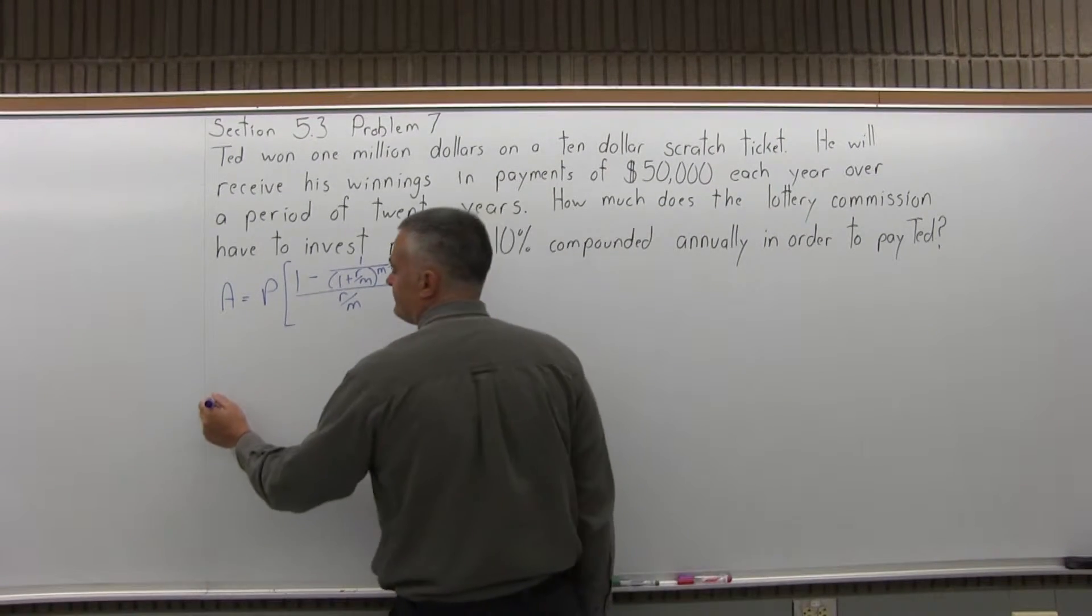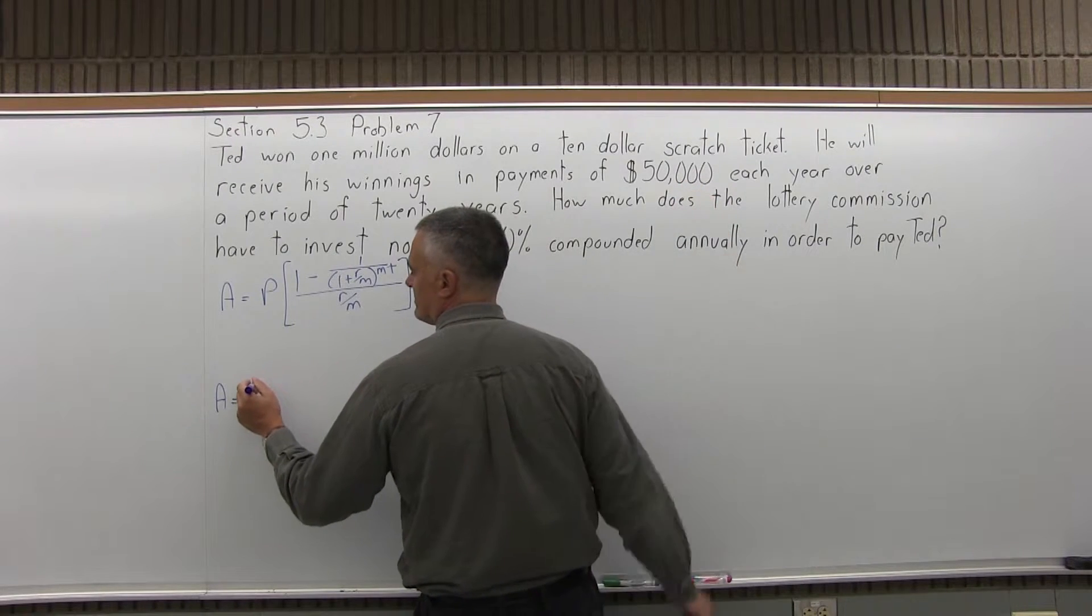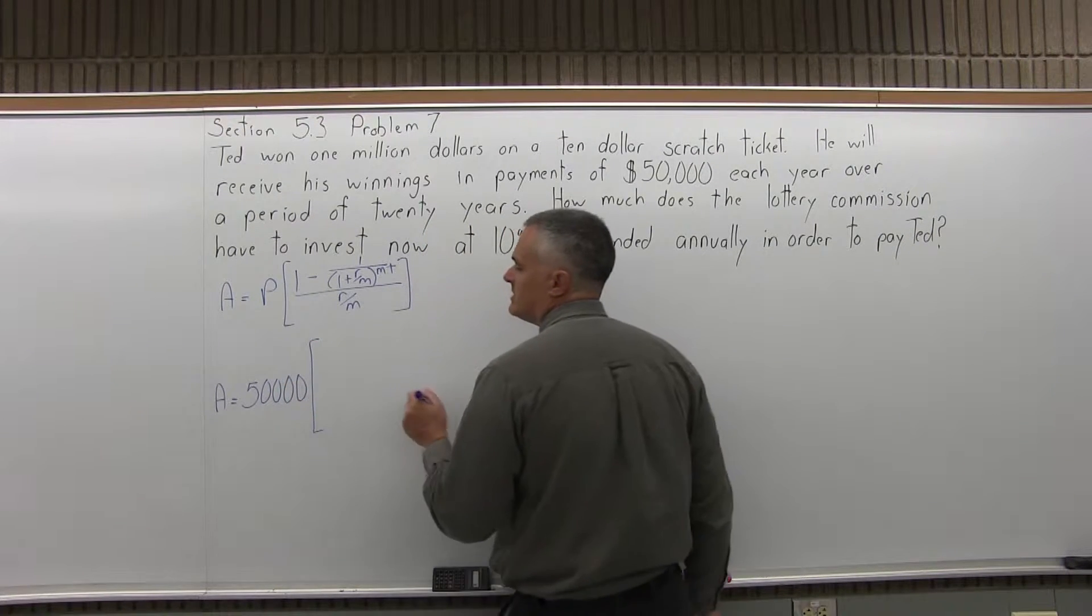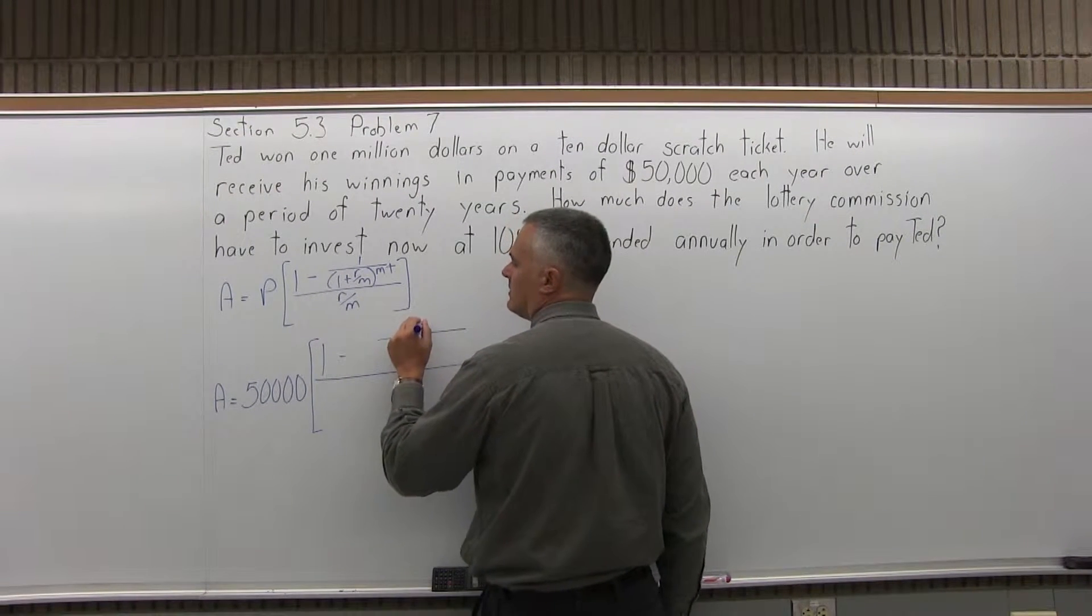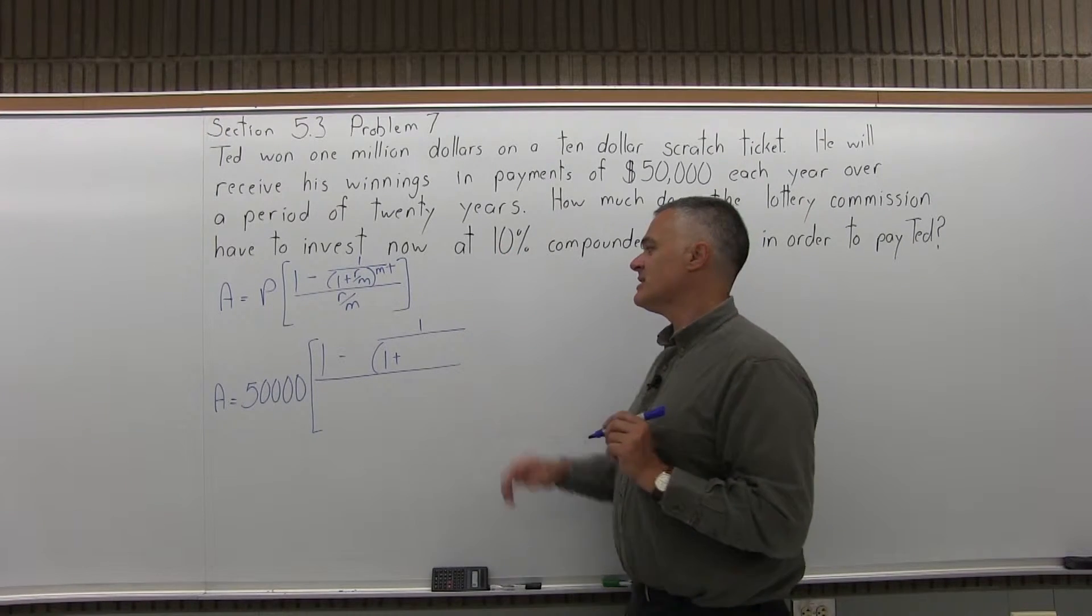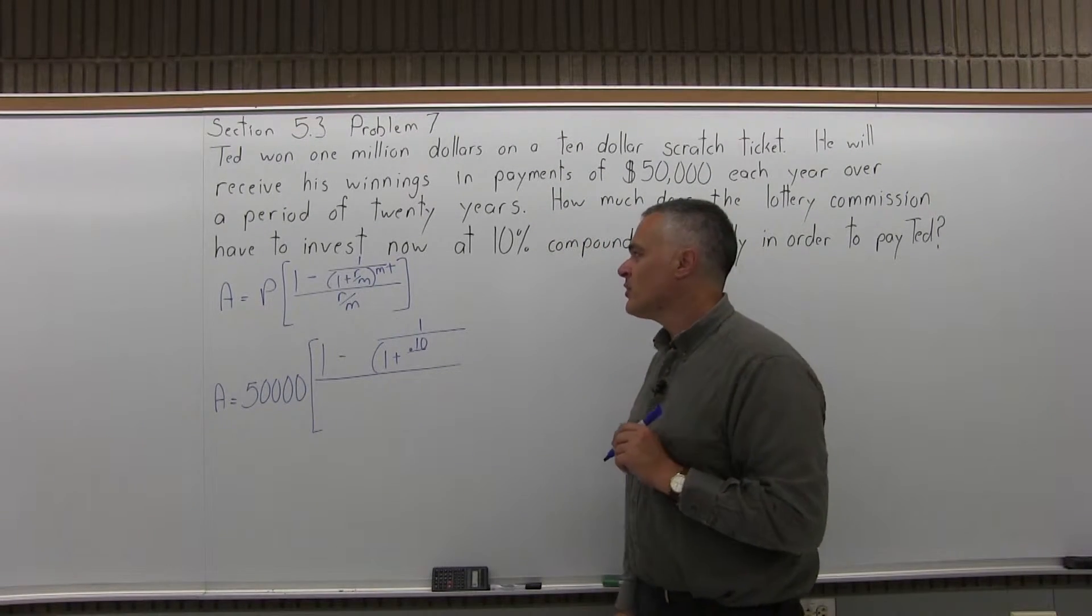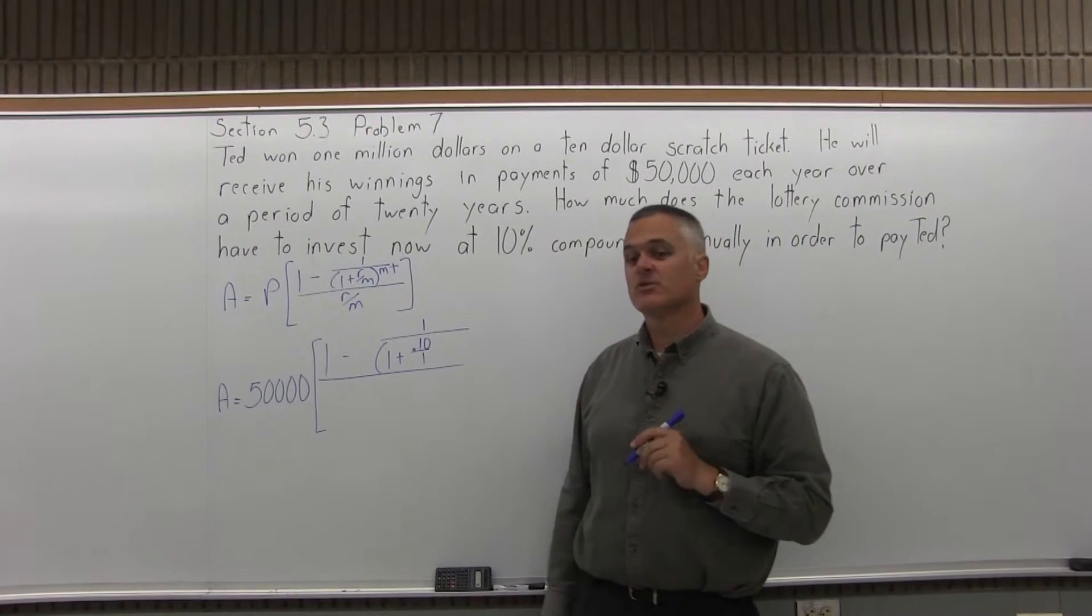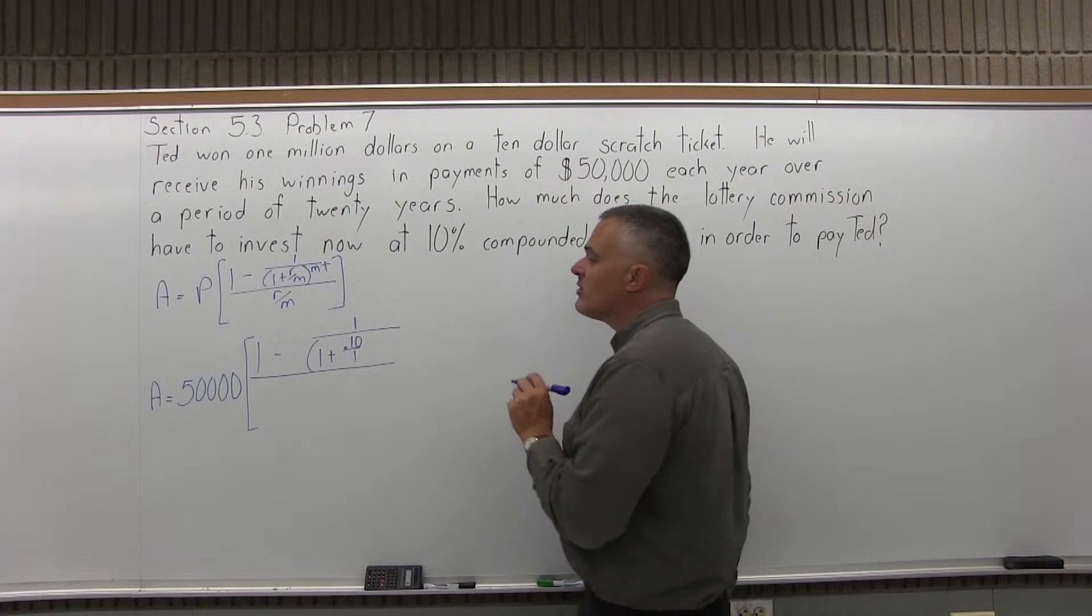So, we have to fill it out. A equals P, the regular payment for this problem is $50,000, times, in the brackets, I have 1 minus 1 over 1 plus R over M. So, 1 plus R, the rate as a decimal. The rate is 10%, so as a decimal, that's .10. You can call it .1 if you like, but I like .10. Over M, the type of compounding or number of payments per year. Now, up until now, most of them have been 12 because we've been doing monthly. But since this is compounded annually, and because Ted's getting one payment per year, the value of M is 1.